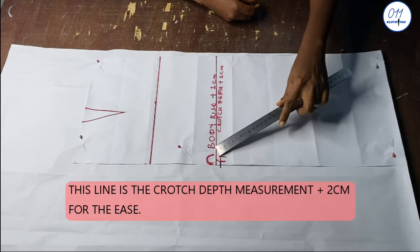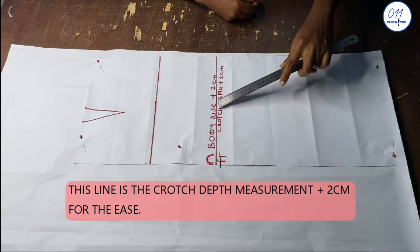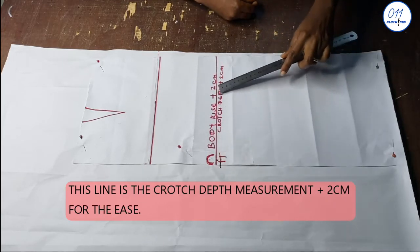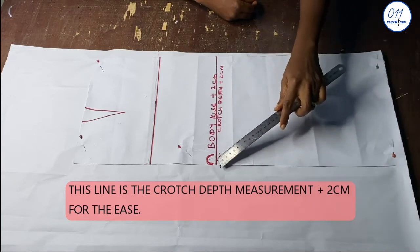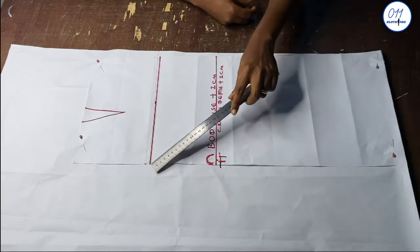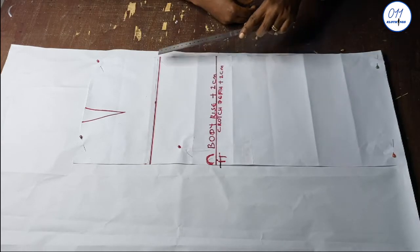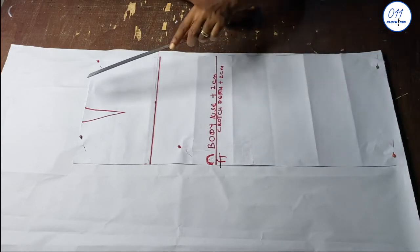This line is the crotch depth measurement plus ease and it's made from the waistline downwards. This line is the midpoint between the crotch depth line and the waistline.